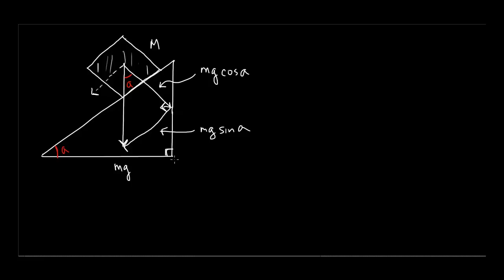So this is angle A, and there were some students who were a little hung up on how I know that that angle is the same as this angle. Intuitively, you might be able to imagine that if I grabbed the ramp and changed the angle by making angle A bigger or smaller, this angle would naturally get bigger or smaller as well. But if that's not intuitive, I want to try to prove that those angles are the same. I'm going to take a look at two triangles within this picture.